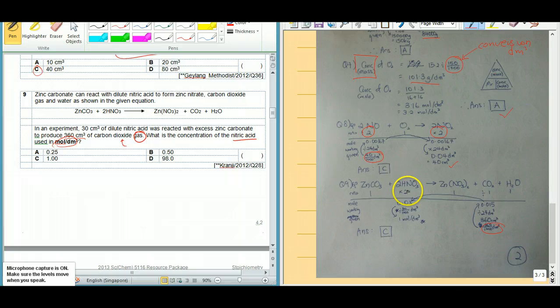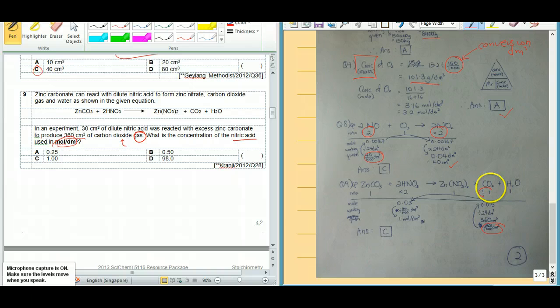Now I want to move to the dilute nitric acid column. So I divide the number of moles by my first ratio, and I multiply the ratio in the nitric acid column. So therefore, 0.015 divided by 1 times 2 is 0.03.